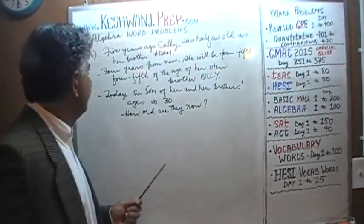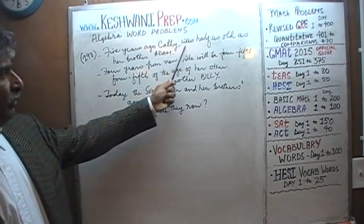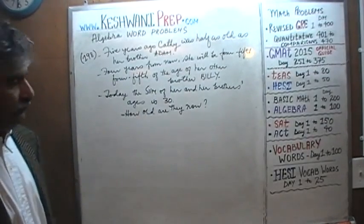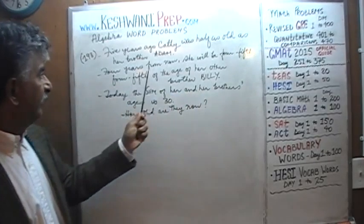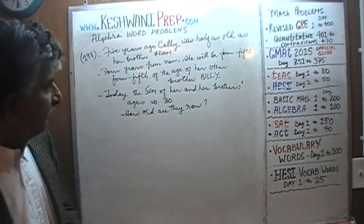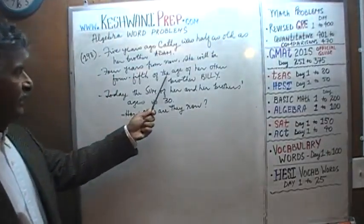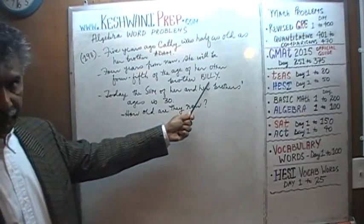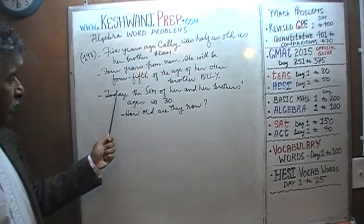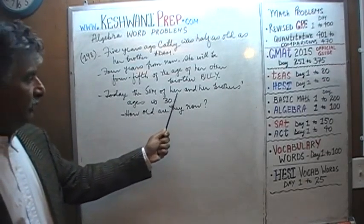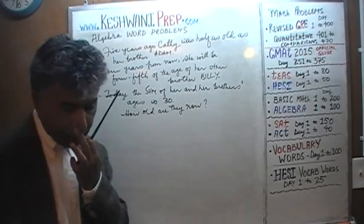The problem says: five years ago, Kathy was half as old as her brother Adam. Four years from now, she will be four-fifths the age of her other brother Billy. Apparently she has two brothers, Adam and Billy. We are further told that the total today — the sum of her and her brothers' ages — is 30.